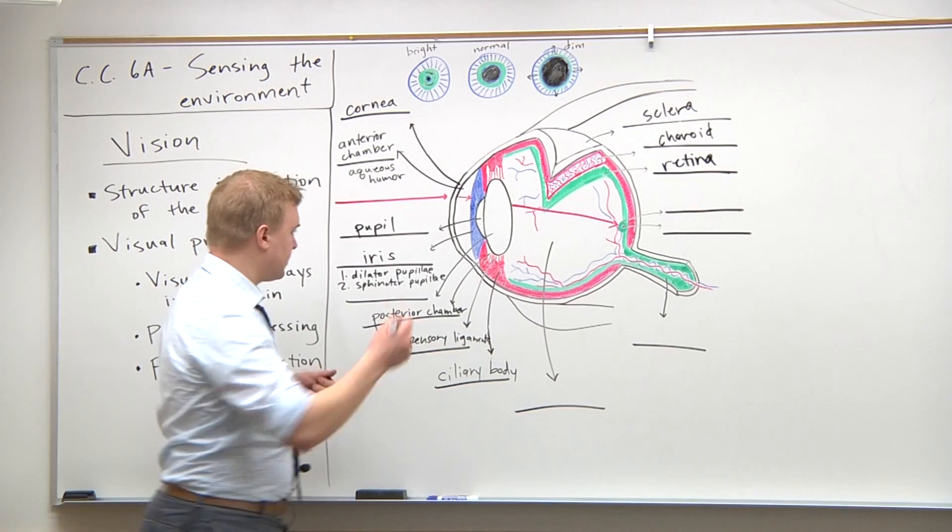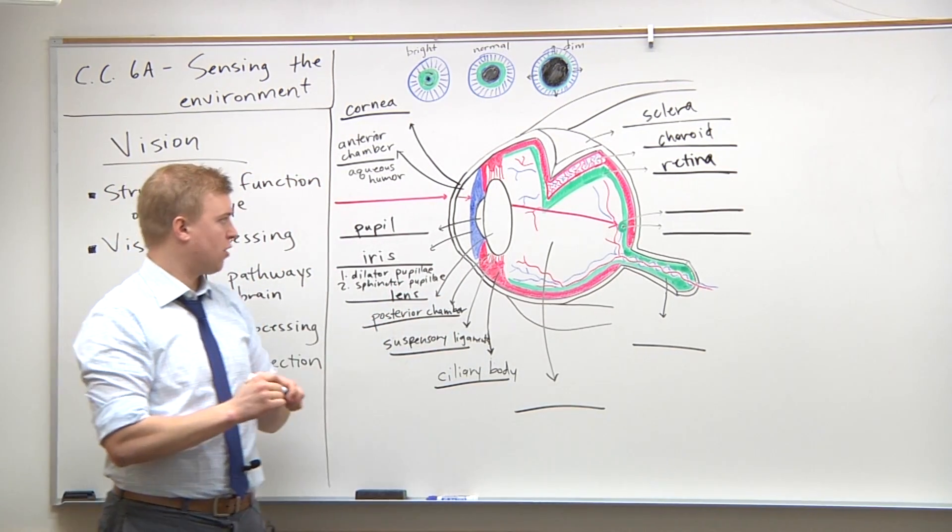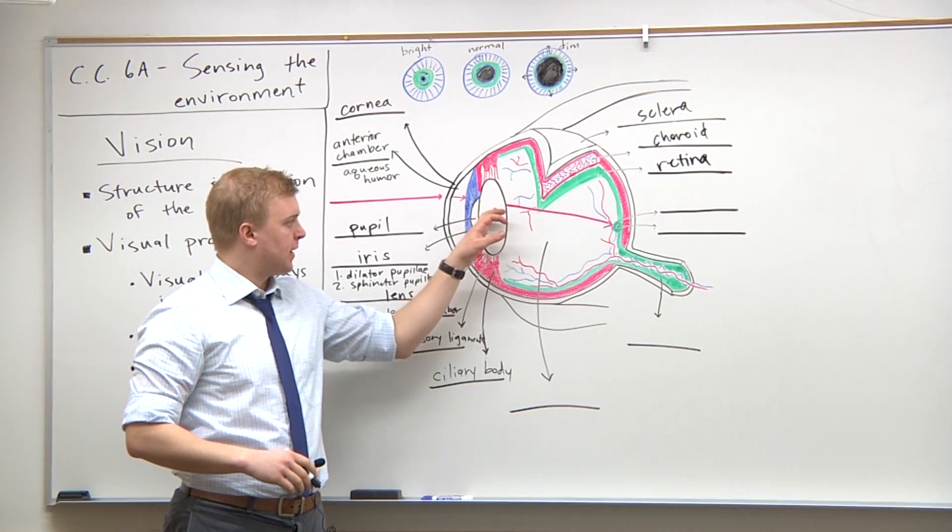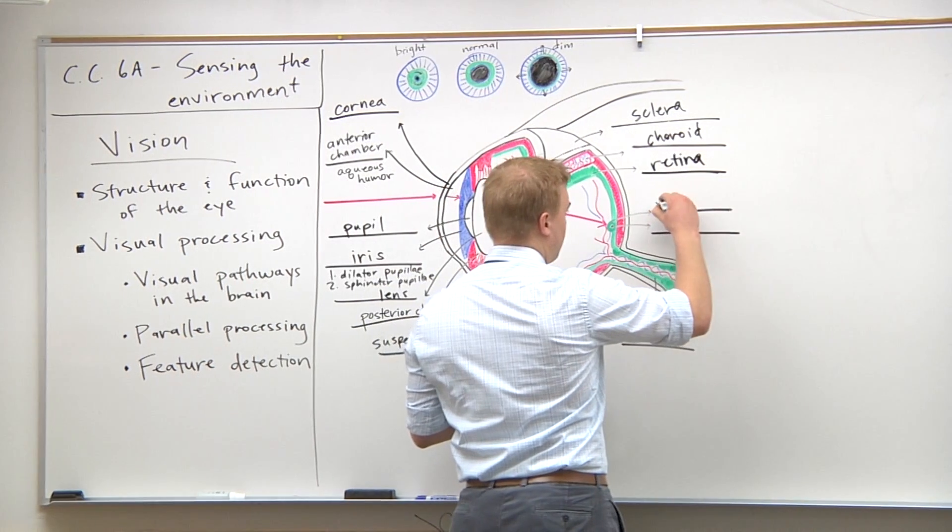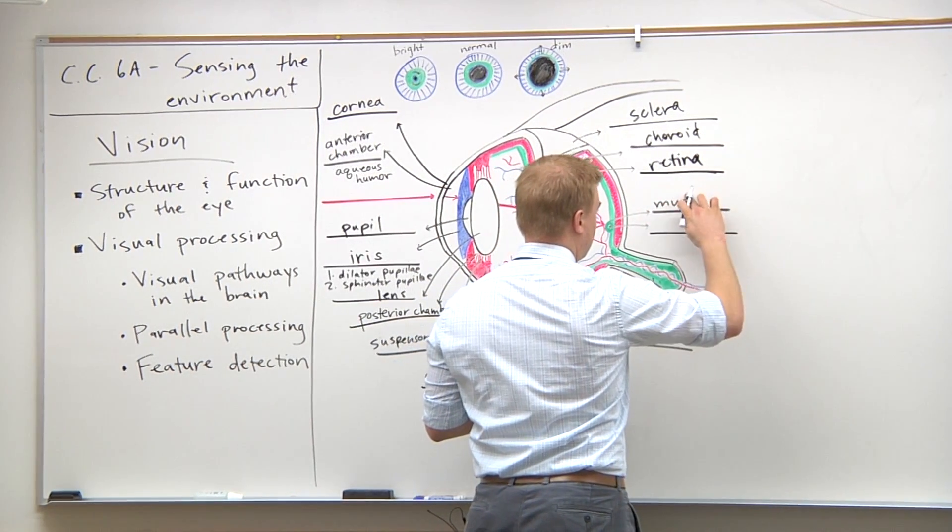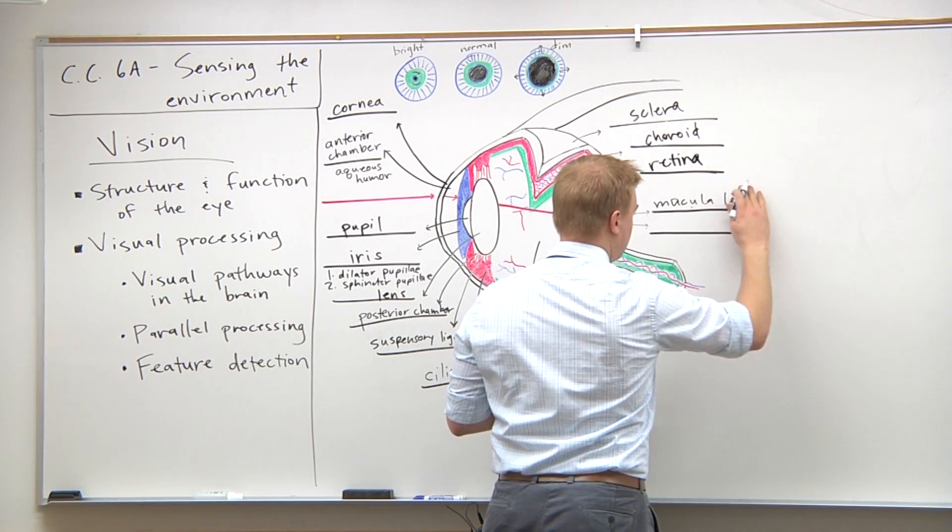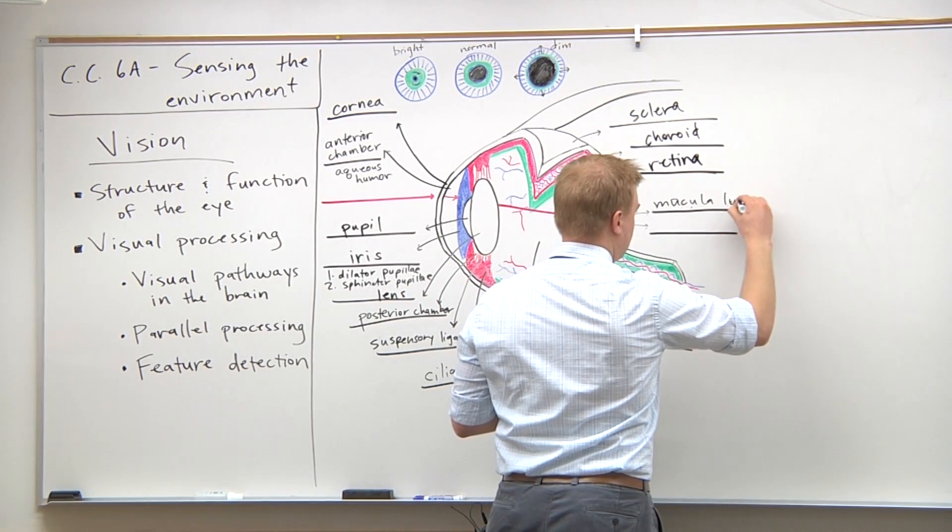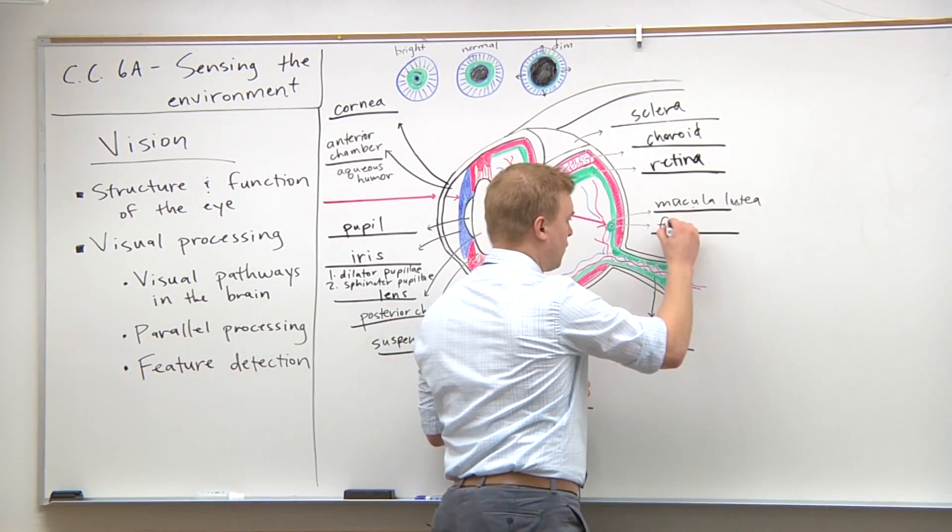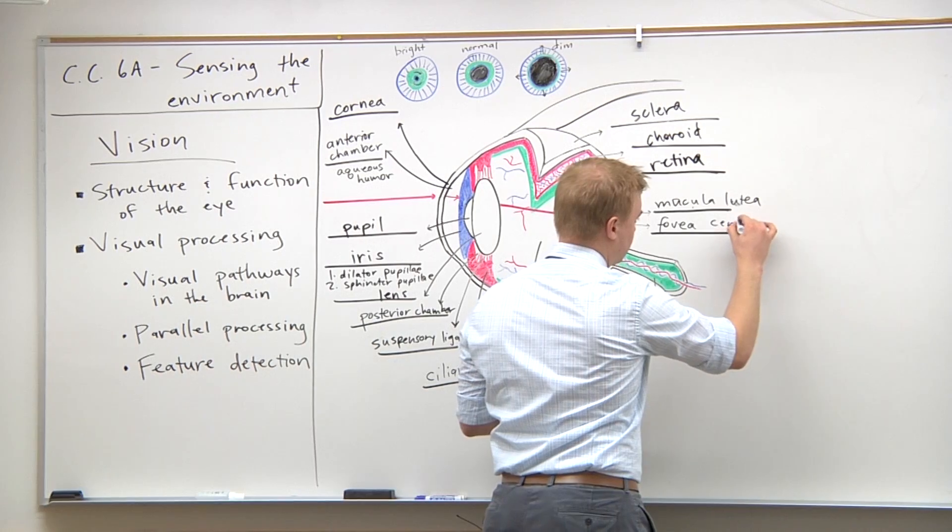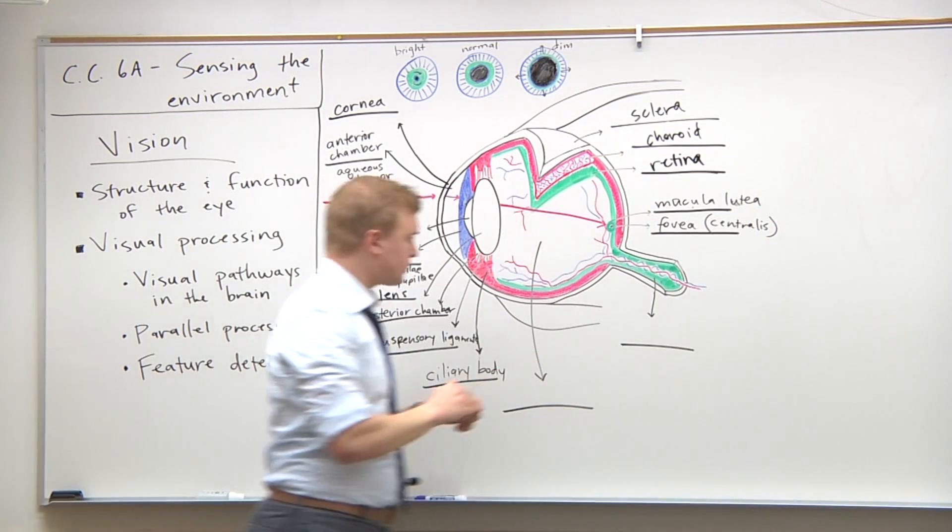We've got the lens, which is obviously a very important part of the eye because that's what allows us to focus the image on the retina. Right here is the macula, the macula lutea, and in the middle of the macula lutea is the fovea, or fovea centralis.